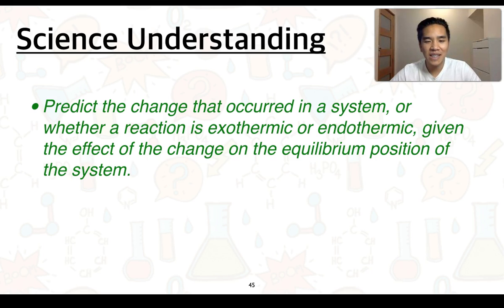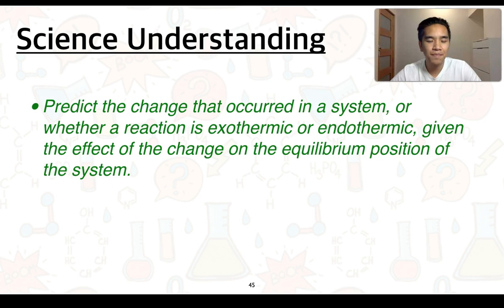For our final science understanding for 2.2, we're going to look at predicting the change that occurred in a system, or whether a reaction is exothermic or endothermic, given the effect of the change on the equilibrium position of the system.